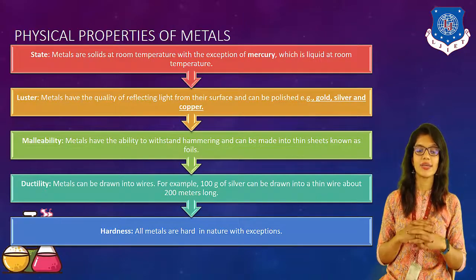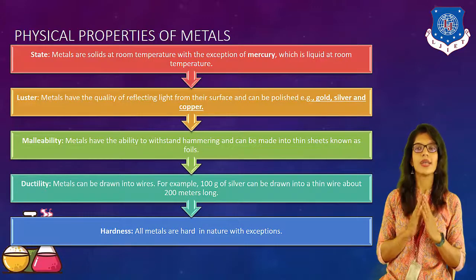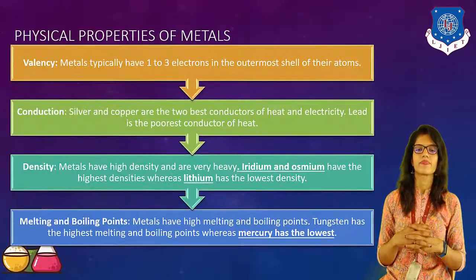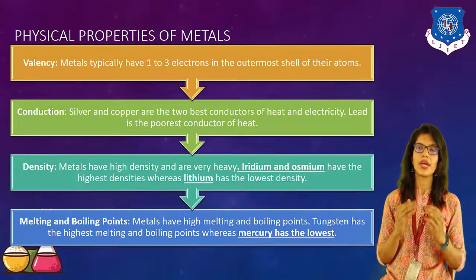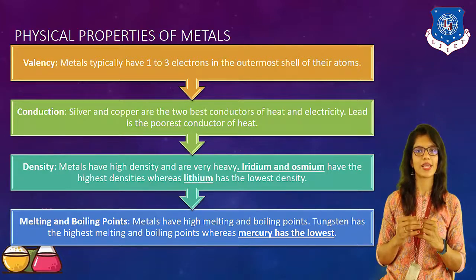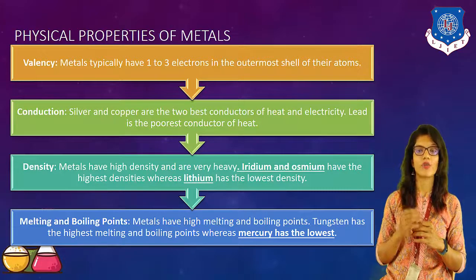The next property is hardness. As we all know, metals are hard in nature, though some exceptions exist. For example, mercury is liquid in nature and is not that hard. Our next physical property is valency. Valency is the number of electrons present in the outermost shell. Metals typically have 1, 2, or 3 electrons in the outermost shell of their atoms.